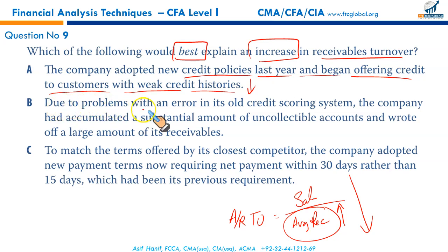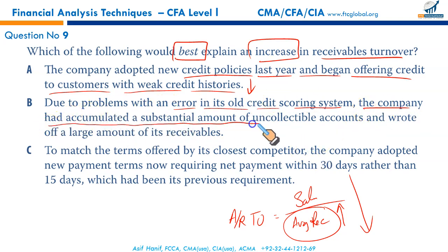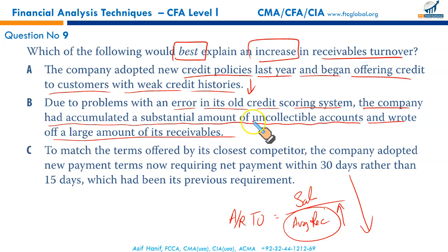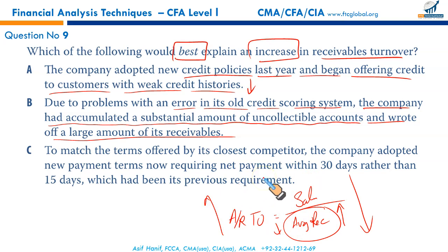Option B: due to an error in its old credit scoring system, the company accumulated uncollectable accounts and wrote off large amounts of receivables. Writing off receivables debits bad debt loss and credits receivables — the denominator falls, causing the ratio to increase. This appears to be the correct option. Option C: extending payment terms from 15 to 30 days to match competitors would swell the receivable balance, causing turnover to fall — not increase. B is confirmed as the right answer.